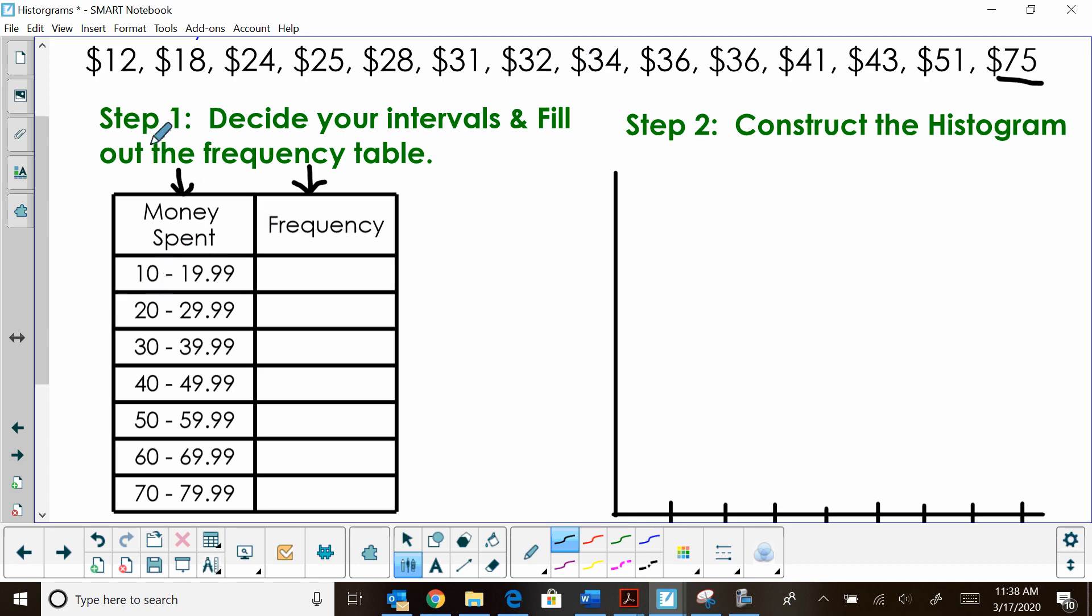So 0 to 19, I'm going to look at the data. So I have one that's $12. That's in that range. And then I have another one that's 18. So I have two tally marks. Then 24 would go in this category. 25 goes in this category. 28 goes in this category. Now I'm up to my 30s. Okay. So I have a 31. I have a 32. I have a 34. And then two 36s. So that's five in that range. And then I have a 41 and a 43. I have a 51. I don't have any in the 60s. And then I have a 75. So here is my frequency table.